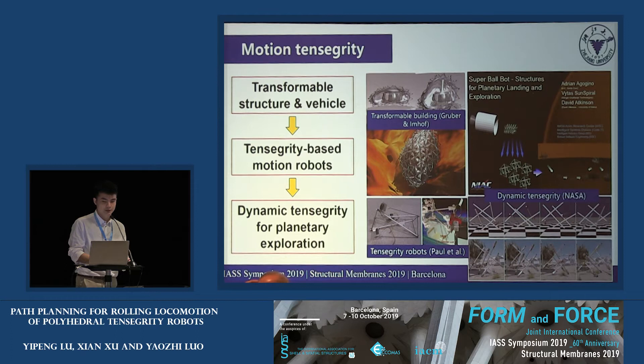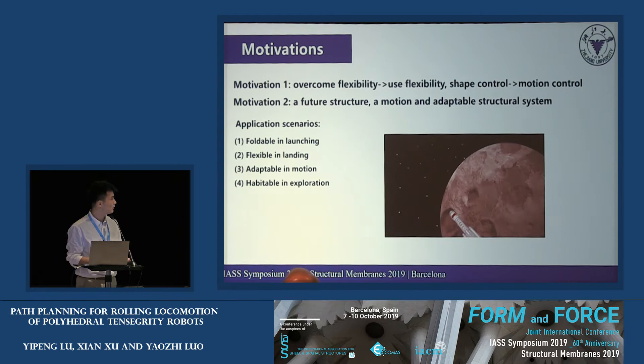Recently, motion tensegrity has experienced the following history: at the very beginning, the study of motion tensegrity focused on transformable structures for vehicles; then tensegrity-based motion robots were put forward; and more recently, studies of dynamic tensegrity for planetary exploration have been greatly developed.